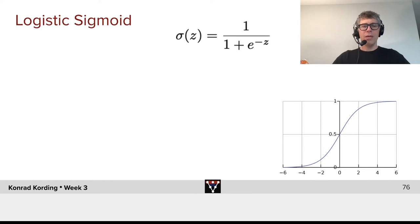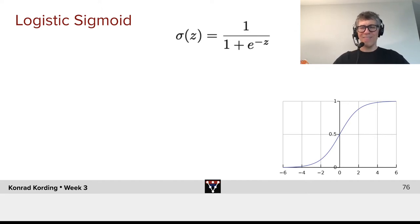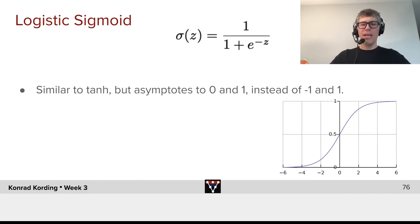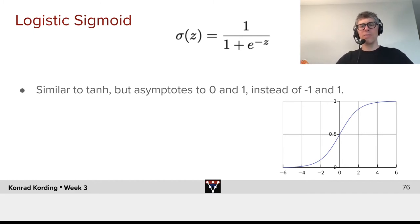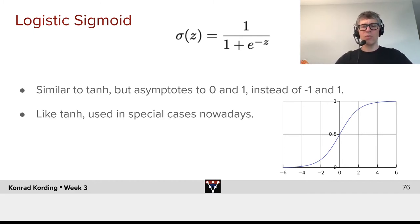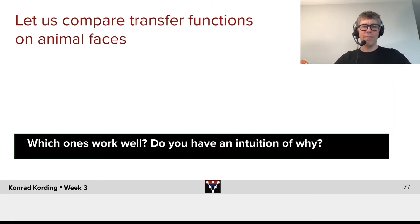Here we have the logistic sigmoid, another popular activation function. In this case, it goes from 0 to 1. It's similar to tanh, but asymptotes at 0 and 1 instead of minus 1 and 1. It's only used in special cases nowadays.